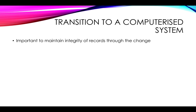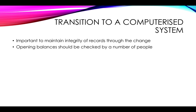The transition to a computerized system is obviously going to be very beneficial for any business, but it's very important that when you make this change you maintain the integrity of the records throughout. In other words, making sure that you don't make any bad mistakes along the way so that the records afterwards are just as trustworthy as before. To achieve this, your opening balances transferred from your manual system to start the software package need to be checked by a number of people, because if only one person does it they might make a mistake and your new accounting records would be wrong.